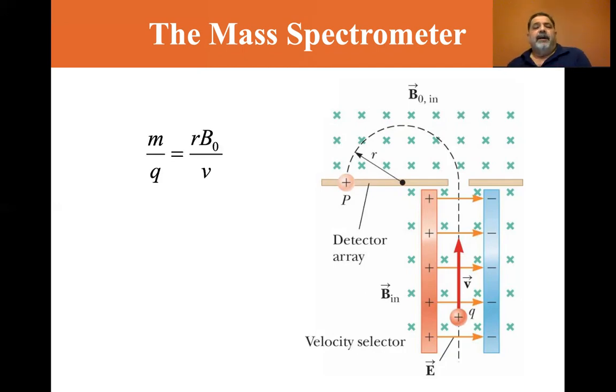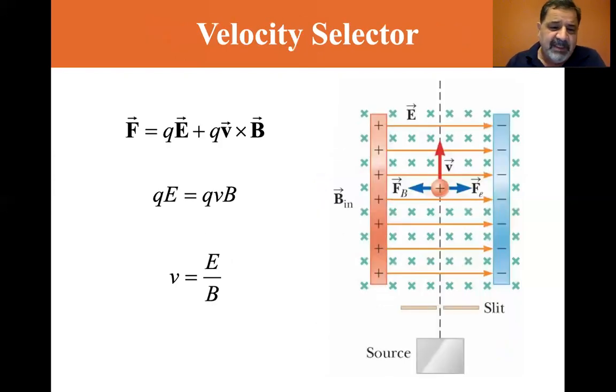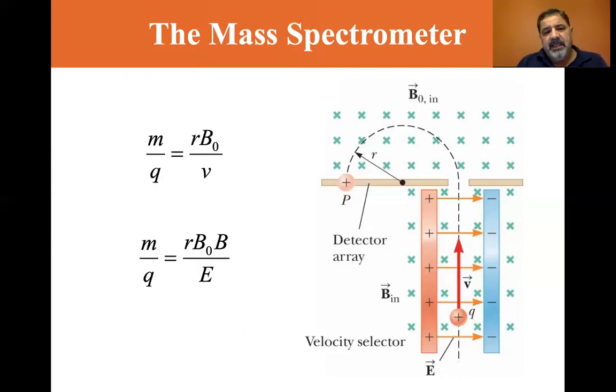Let's go through the mass divided by the charge is equal to R B zero divided by the velocity. Whoops, went too far. And so in the from the previous, the velocity is equal to E B. So we can use that velocity in the denominator. So it's B divided by E. So it goes through the velocity selector and we see that the mass divided by the charge is equal to R B zero, and the velocity is B over E. One over the velocity is B over E.